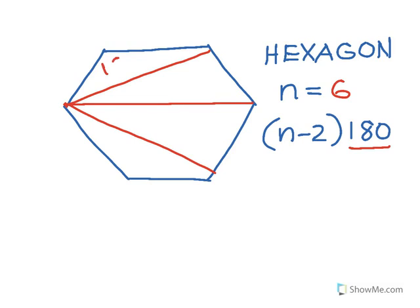And as you know, the sum of the measures of the angles of any triangle is 180 degrees. So if I can build four 180 degree triangles inside of a hexagon, then that means the sum of the angle measures of a hexagon must be four times 180. And that's how we get the formula.